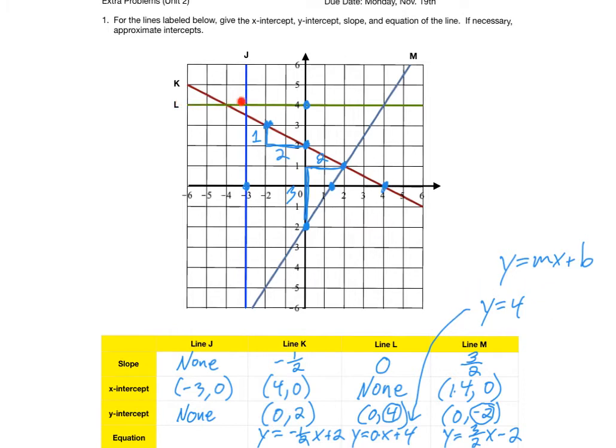Notice the simplified form of line L's equation is Y equals 4. Notice it goes through the Y axis, and precisely at the point 0 comma 4. The line J goes through the X axis, and precisely at the point negative 3 comma 0. So the equation of that line is simply just X equals negative 3.